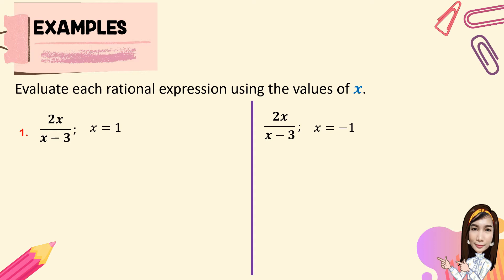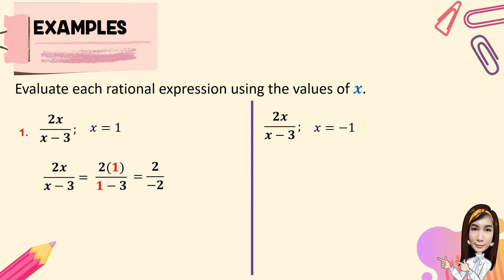Evaluate each rational expression using the values of x. For number 1, we have 2x all over x minus 3. We replace the value of x with 1: 2 times 1 all over 1 minus 3. Performing the indicated operation: 2 times 1 is 2, over 1 minus 3 which is negative 2. So 2 divided by negative 2 is equal to negative 1. The value of 2x over x minus 3 when x equals 1 is negative 1.